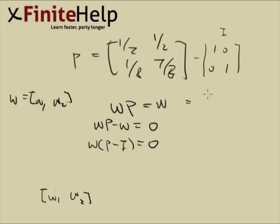So p minus i is going to be negative 1 half, 1 half, 1 eighth, and negative 1 eighth.